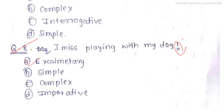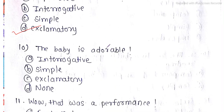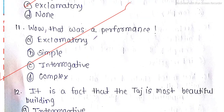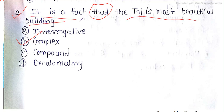Question 9: 'We are going to our dream location!' — exclamatory mark, so exclamatory sentence. Question 10: 'The baby is adorable!' — again exclamatory mark, so exclamatory sentence. Question 11: 'Wow, that was a performance!' — exclamatory mark, so exclamatory sentence. Question 12: 'It is a fact that the Taj is the most beautiful building.' — 'that' is used as a conjunction joining two clauses, so this is a complex sentence.